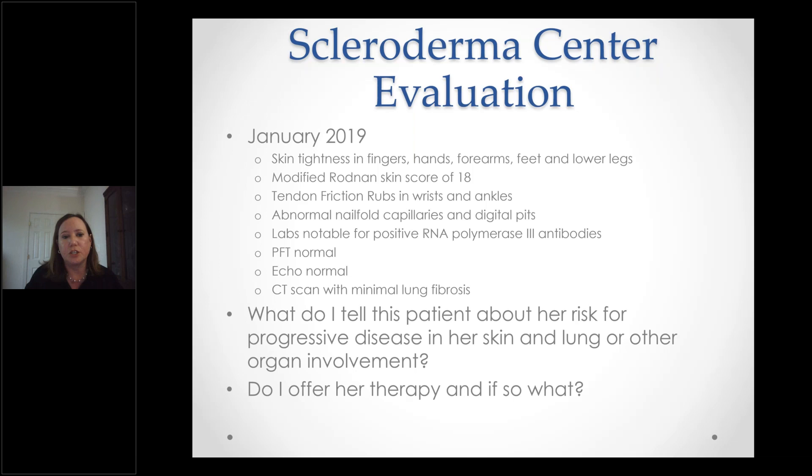She was seen in the scleroderma center and noted to have skin tightness in her fingers, hands, forearms, feet, and lower legs, with a modified Rodman skin score of 18, which is a significant burden of tightness. She had tendon friction rubs at her wrists and ankles, and blood vessel abnormalities under microscopy. Additional laboratory testing showed she made antibodies to RNA polymerase 3. She had normal lung function, echocardiogram, and CT scan with really minimal amounts of scar tissue. The question is: what do I tell this patient about her risk for progressive disease in her skin, lung, or other organ involvement, and when do we offer therapy?